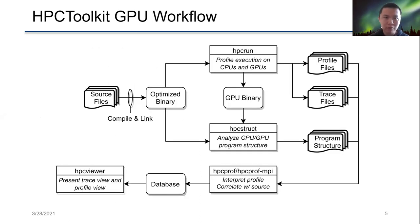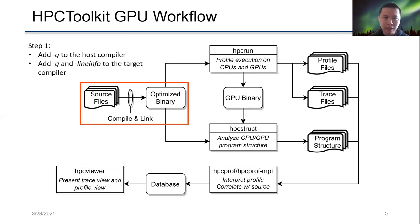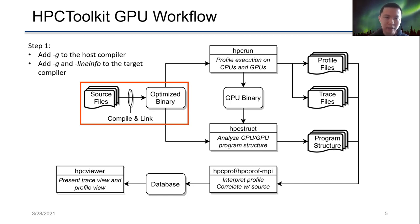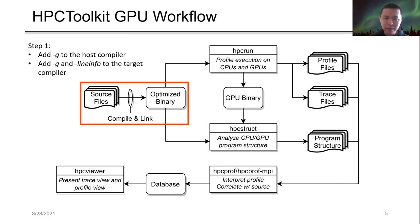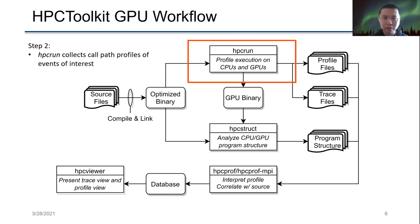Here's the workflow of HPCToolkit when profiling GPU applications. First, we compile our applications with -G to generate line information. On the target side, if you are using an NVIDIA GPU, you also want to pass -lineinfo to ensure that line info for the GPU binaries is compiled in. After the application is compiled, we have optimized binaries and executables. We can then use HPCRun to collect call-path profiles of events of interest.